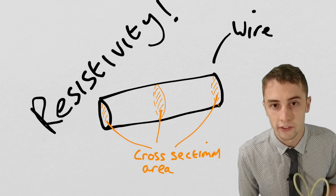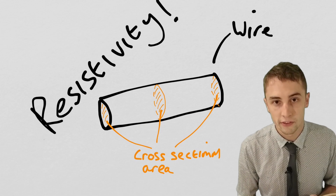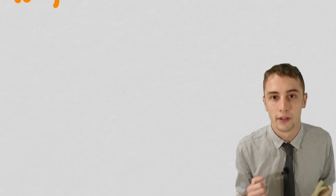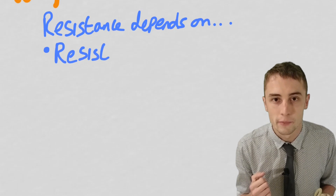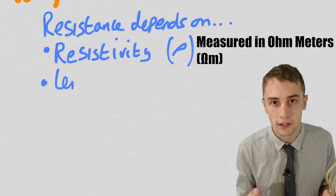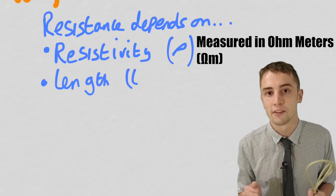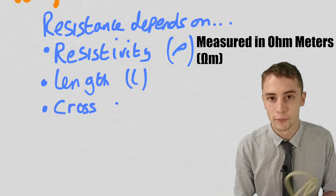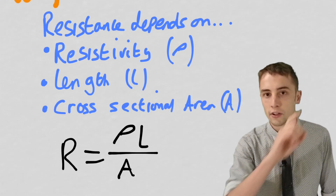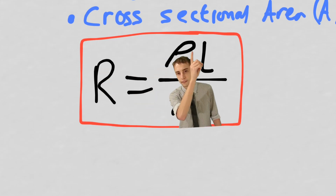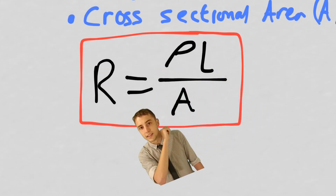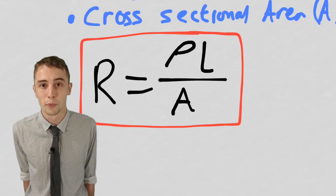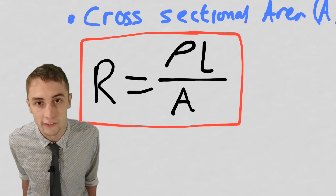There is an equation we can use for resistance that involves resistivity. The resistance of a wire depends on three things: firstly the resistivity of the metal — higher resistivity means the metal is better at resisting, making the resistance bigger; secondly the length of the wire — a longer wire has more resistance; and a larger cross-sectional area makes the resistance go down, so that goes on the bottom of the equation. So we have: resistance equals resistivity multiplied by length divided by cross-sectional area. That's what resistivity is, and that's a new equation for resistance using the dimensions of your wire and the resistivity of the metal it's made from.